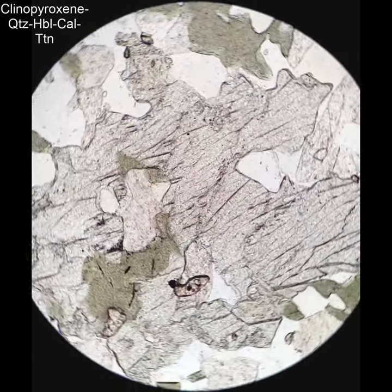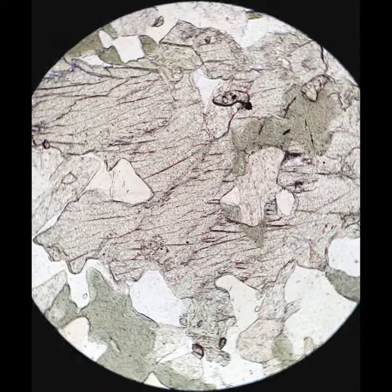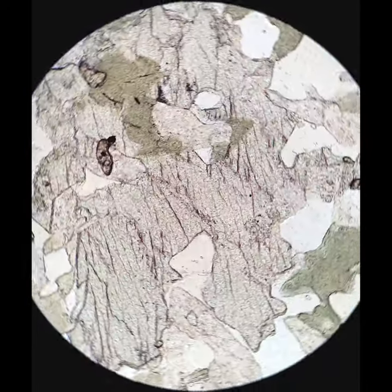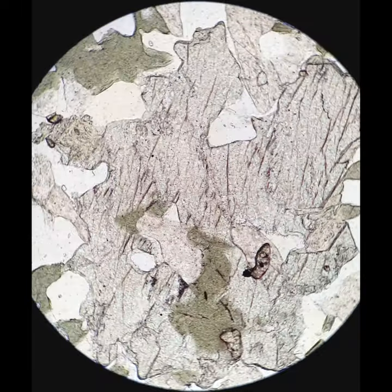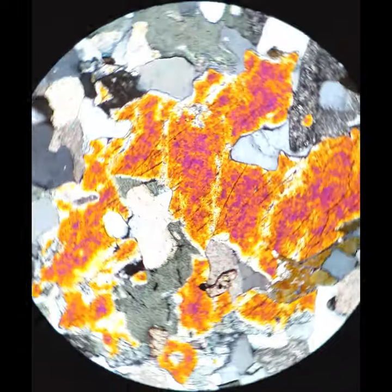This is to illustrate differences in relief. The pale green, higher-relief mineral is clinopyroxene. The sort of blue-green, more pleochroic mineral is hornblende. And the hornblende has a lower relief than the clinopyroxene.